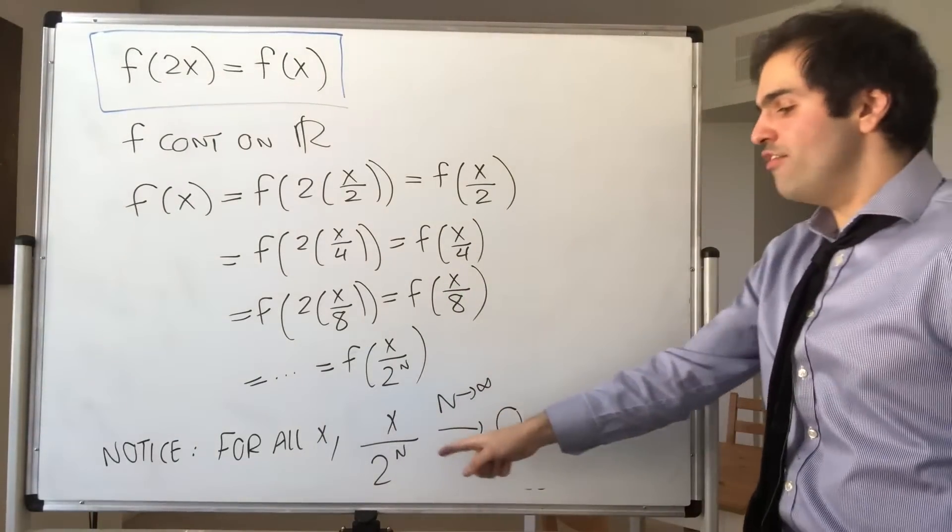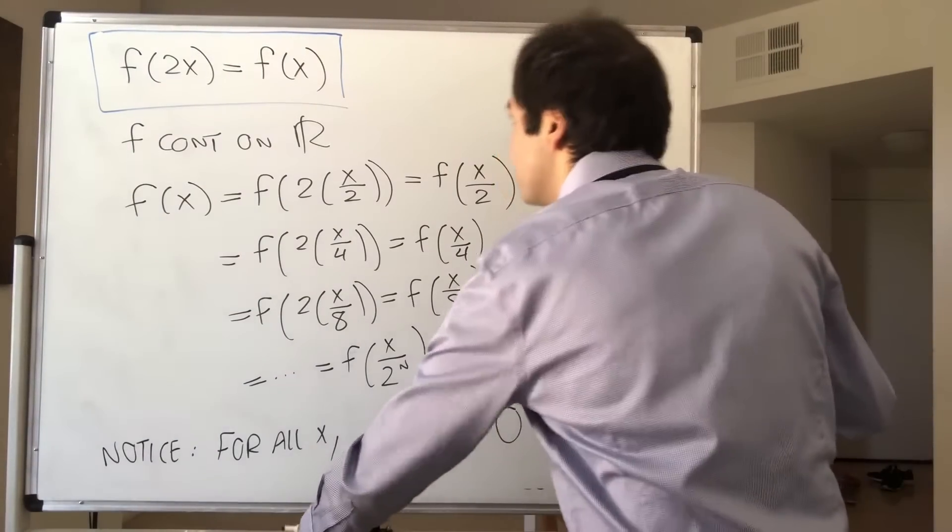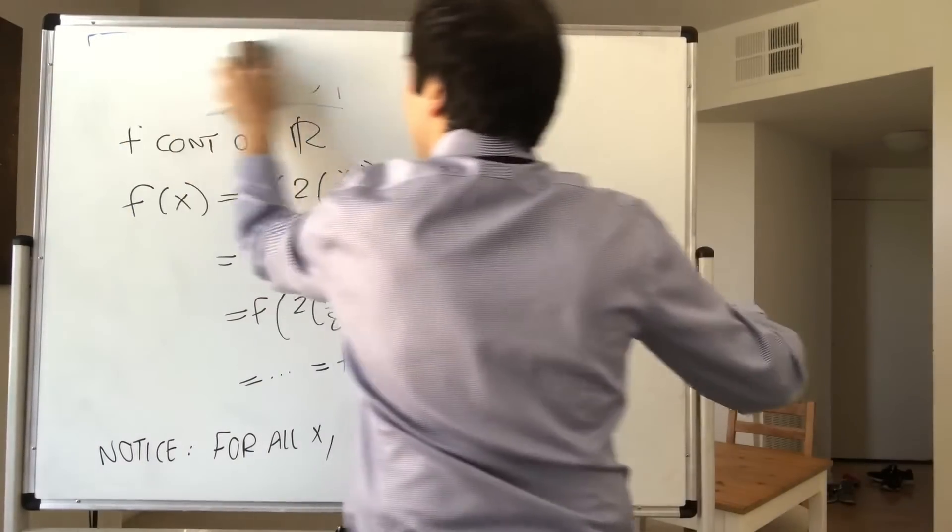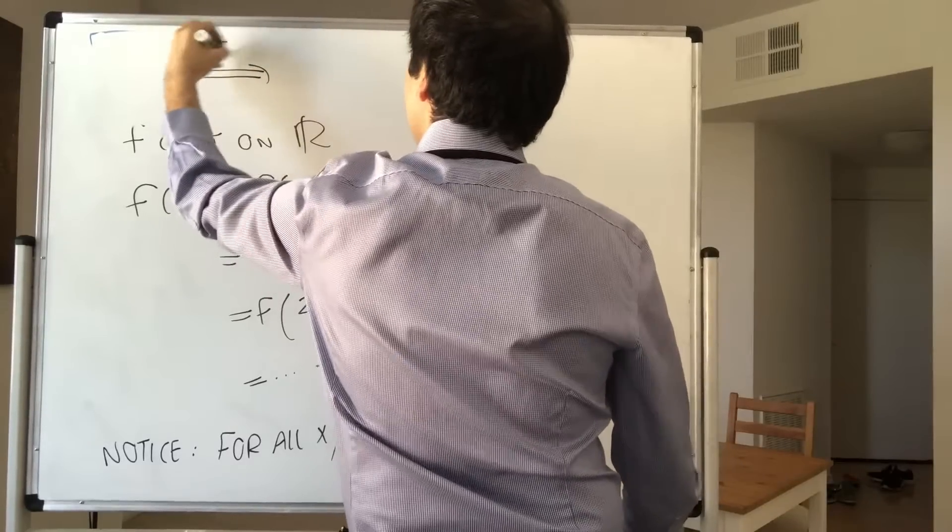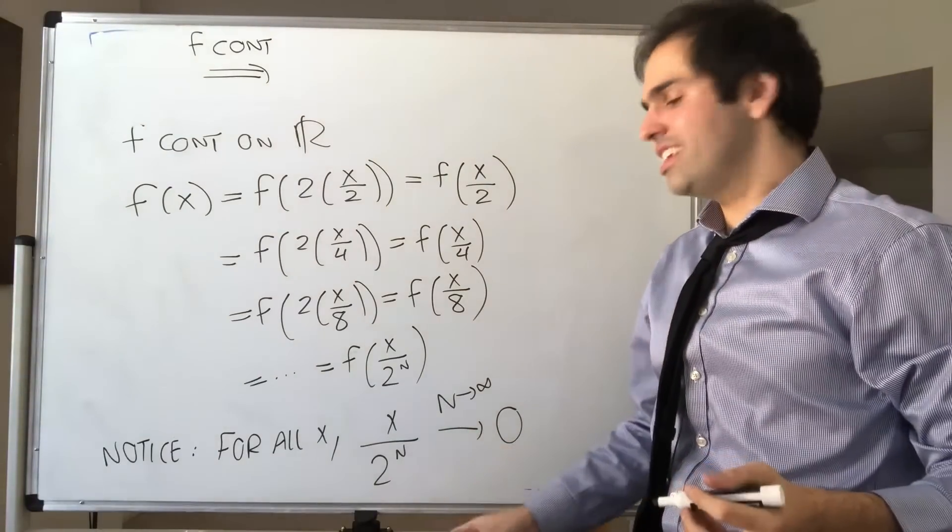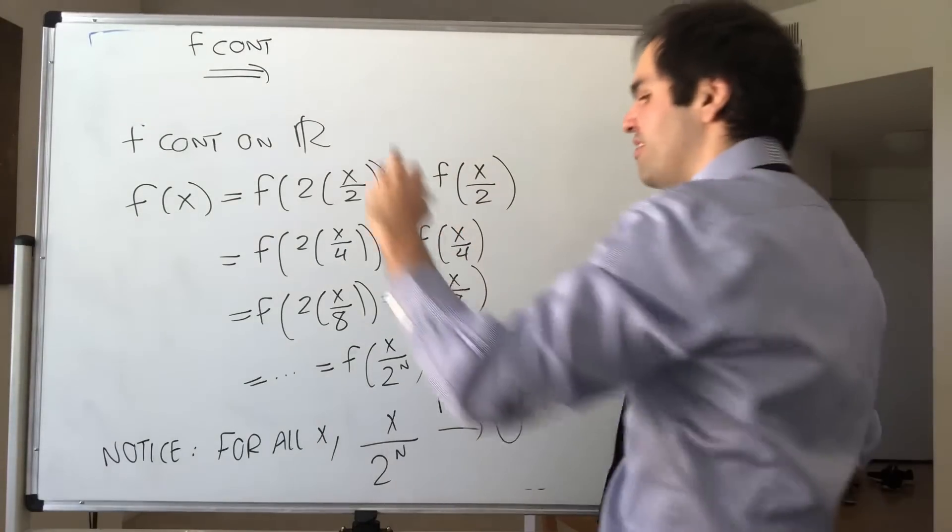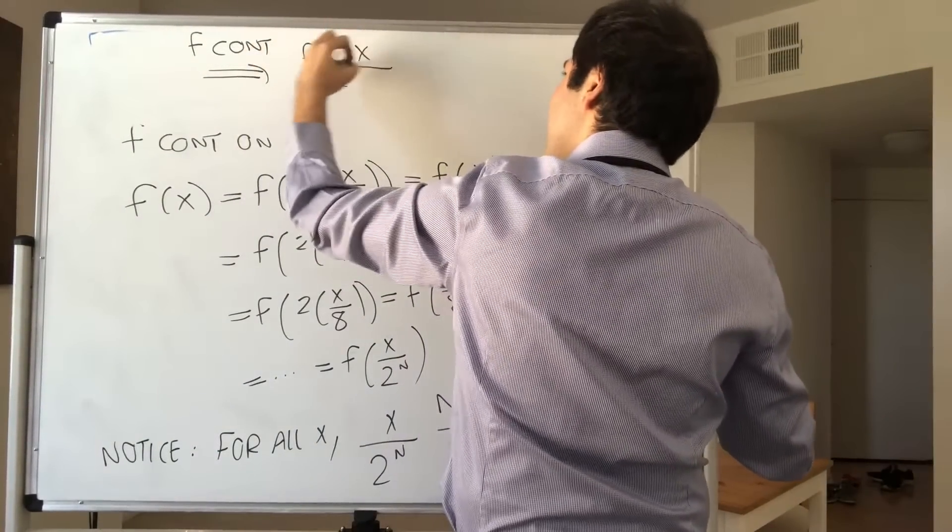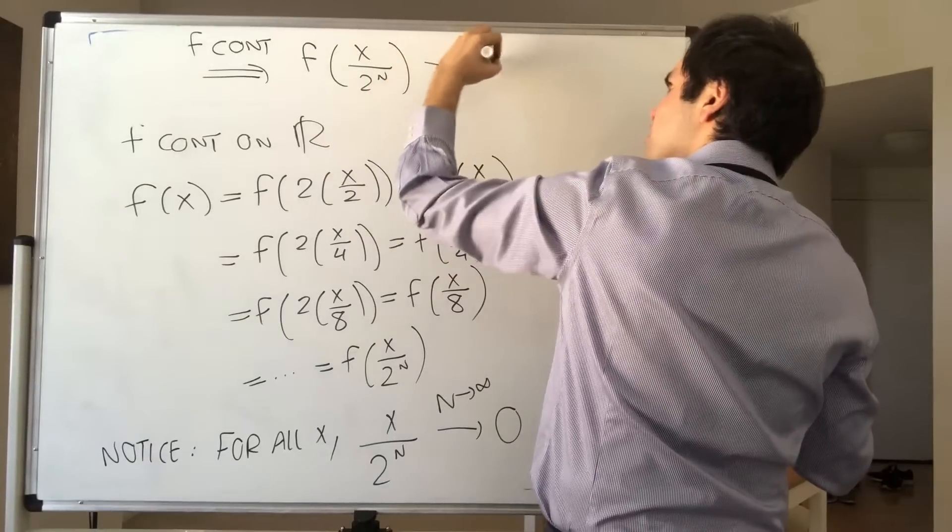In particular, since f is continuous, we can just apply f to this convergence property. Therefore, the definition of continuity is if sn goes to s, f of sn goes to f of s. So in particular, we get f of x over 2 to the n goes to f of 0.